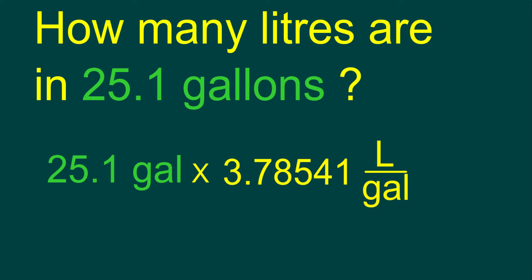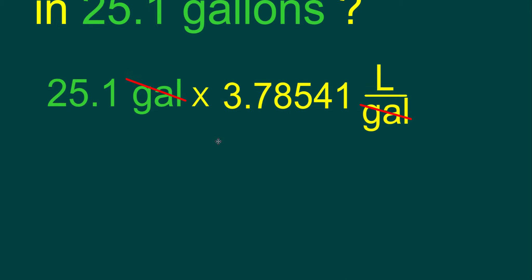Now, the cool thing about doing these conversions is we notice that we have gallons on the top and gallons on the bottom. So, the units end up cancelling off, and now all we need to do is take 25.1 and multiply it with 3.78541. And when we do that,